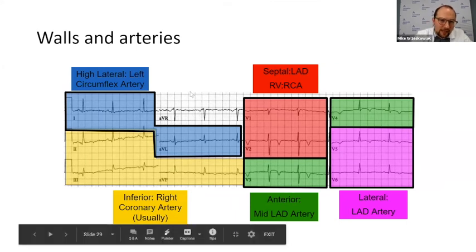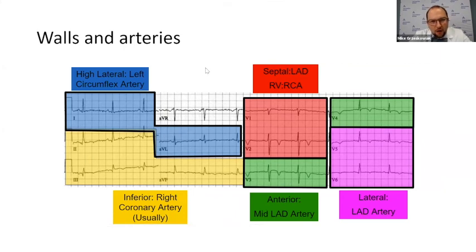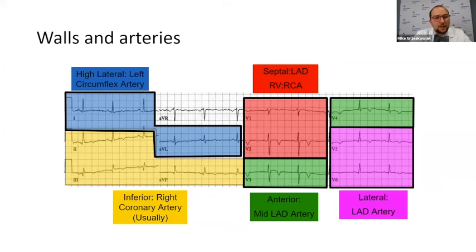The last lead is AVR. AVR doesn't necessarily correspond to any specific wall, but if you have an isolated ST elevation in AVR along with other changes on the EKG, this can be very concerning — an ominous sign that something much worse is underlying in the patient.